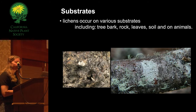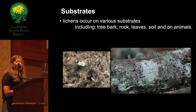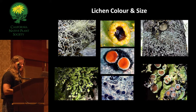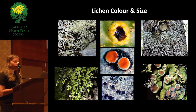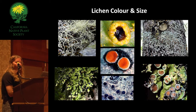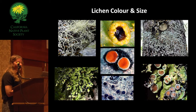Lichens can occur on various substrates including tree bark, rocks, leaves, soil, and even on animals. They occur in various colors and sizes — blacks, browns, and yellows — and can actually change colors based on whether they're wet or dry, and also based on where they are in the canopy or landscape due to light and moisture. They range from two millimeters up to two meters long.